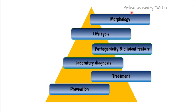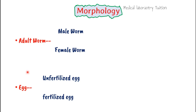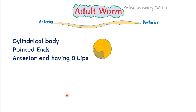In this video we study the morphology, life cycle, pathogenicity or clinical features, laboratory diagnosis, treatment, and prevention of Ascaris lumbricoides. In case of morphology, we have an adult form and egg. In between we also have a larva form, but the larva form is not as important in morphology — though we should know there is a larva stage in Ascaris lumbricoides. In the adult form we have a male worm and a female worm, and for eggs we have two types: unfertilized and fertilized.